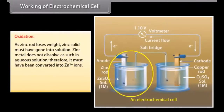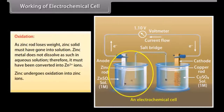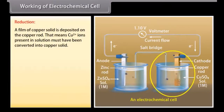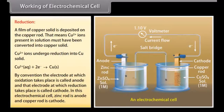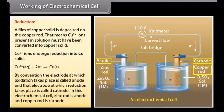Working of electrochemical cell. Oxidation: as the zinc rod loses weight, zinc solid must have gone into solution. Zinc metal does not dissolve as such in aqueous solution; therefore, it must have been converted into zinc ions — zinc undergoes oxidation into zinc ions. Reduction: a film of copper solid is deposited on the copper rod, meaning copper ions present in solution must have been converted into copper solid — copper ions undergo reduction into copper solid. By convention, the electrode at which oxidation takes place is called anode, and the electrode at which reduction takes place is called cathode. In this electrochemical cell, zinc rod is the anode and copper rod is the cathode.